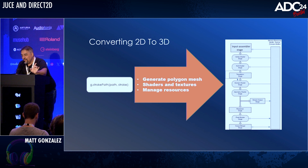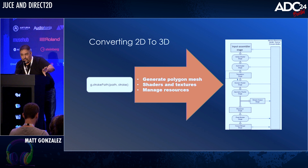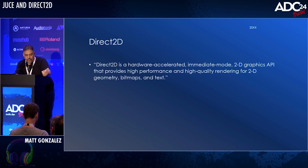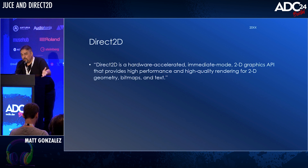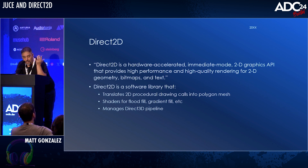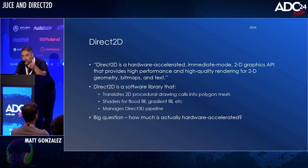This isn't the most modern way to do this — this is how Direct2D does it. Direct2D is actually dated; it was introduced in Windows 7 in 2009, so since then there have been a lot of advancements in GPU technology. There's room for improvement, but this is how Direct2D handles things. Looking at Microsoft's documentation, it says Direct2D is a hardware-accelerated, immediate-mode 2D graphics API that provides high performance and high quality rendering for 2D geometry, bitmaps, and text. It's really just a software library that does all that pipeline work for us, giving us Windows hardware-accelerated rendering in principle. What's not clear is how much work is still done in software versus hardware — the documentation is a little vague on that.